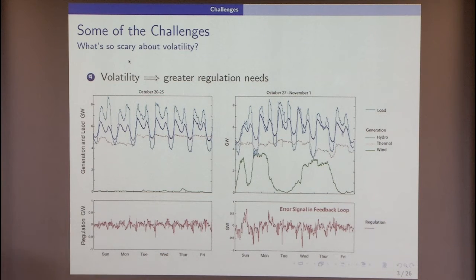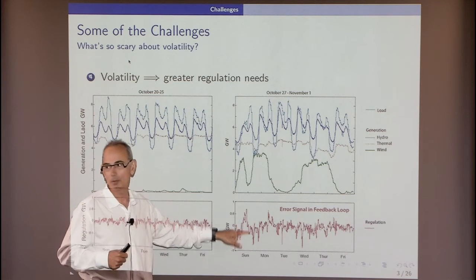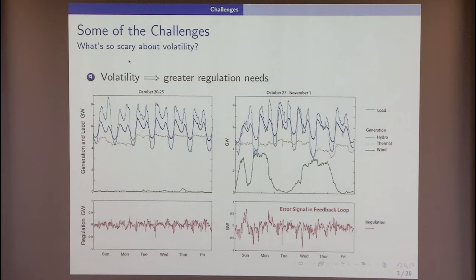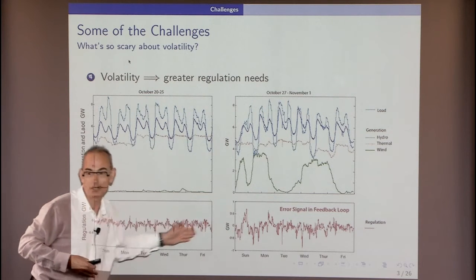Hydro generators hate ramping. Mainly, if they're asked to go up and down like that, it means they have to withhold power — they don't get to sell as much energy. If they have to ramp up and down, reaching their limits, they can't sell at max continuously. The biggest anger is what's called opportunity cost: they don't get to sell power. So there are huge fights because hydro generators don't like doing regulation instead of maximizing generation.